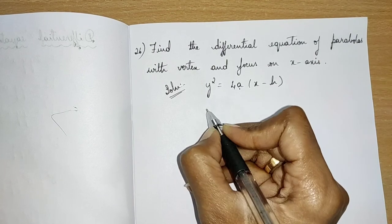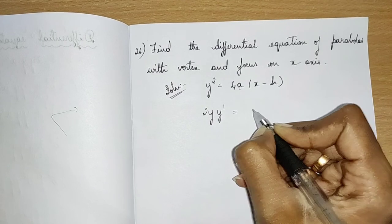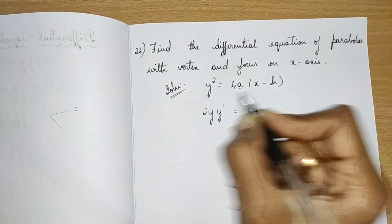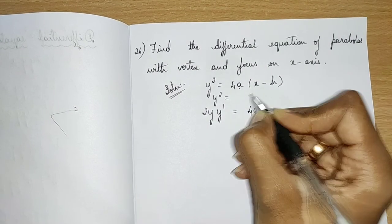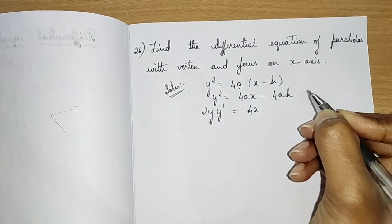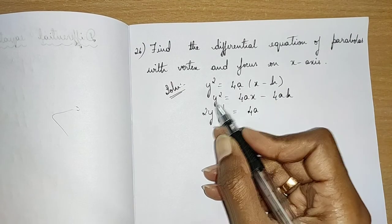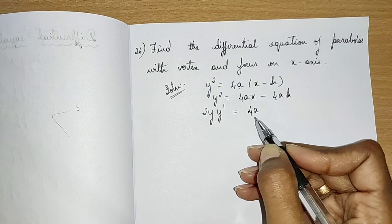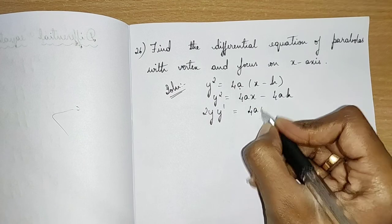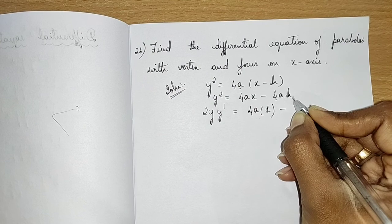Let us differentiate: differentiation of y² is 2y·(dy/dx). There is an intermediate step — I will multiply 4a inside to get 4ax − 4ah. So here we have 2y·(dy/dx) = 4a·(differentiation of x) minus 4ah, which is a constant. Differentiation of a constant is 0.